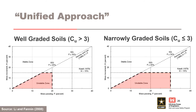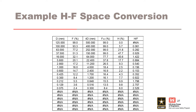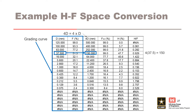Lee and Fannin, in their 2008 paper, proposed a unified approach combining the methods of Kezdi and Kenny and Lau. The unified approach requires converting the cumulative particle size distribution or grading curve from F-D space to a shape curve in F-H space, where D is the particle size, F is the mass passing, and H is the mass increment. The first two columns are the cumulative particle size curve. The third column is 4 times D. The fourth column obtains the mass passing F for 4D by interpolating on D. The fifth column obtains H by subtracting F from F4D.